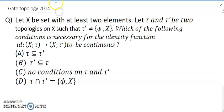Hello dear friends, welcome to my channel. Today's discussion is a GATE 2014 question. Let X be a set with at least two elements. Let tau and tau' be two topologies on X such that tau' does not equal phi comma X — meaning it's not the discrete topology.